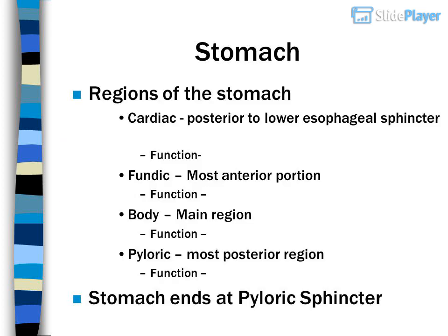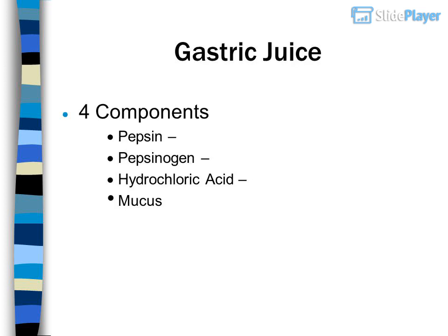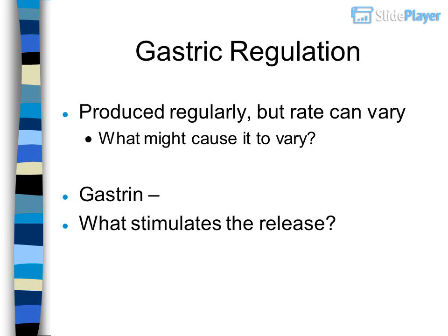What happens in the stomach? Regions of the stomach: cardiac — posterior to the lower esophageal sphincter; fundic — most anterior portion; body — the main region; pyloric — most posterior region. The stomach ends at the pyloric sphincter. Gastric juice has four components: pepsin, pepsinogen, hydrochloric acid, and mucus.